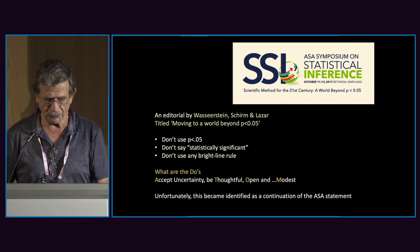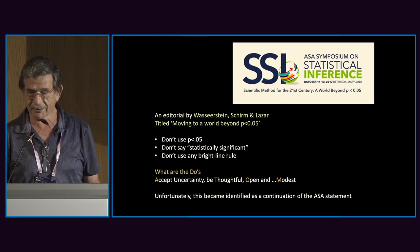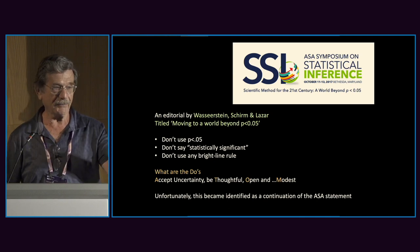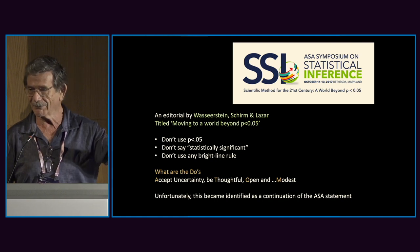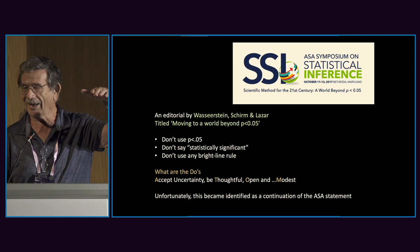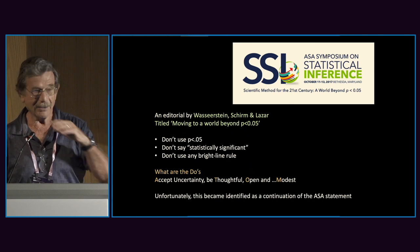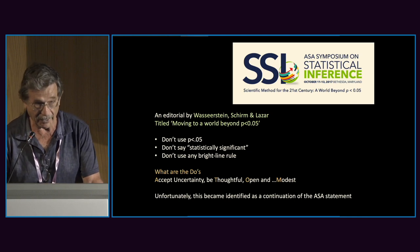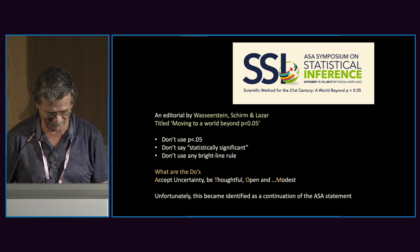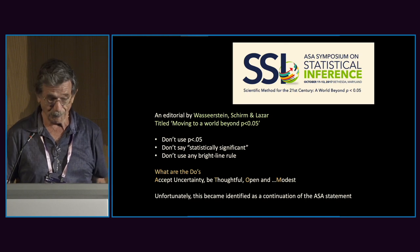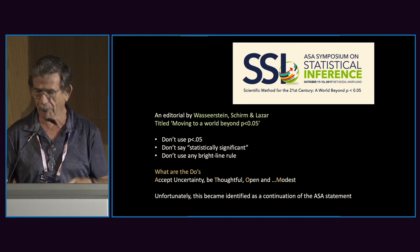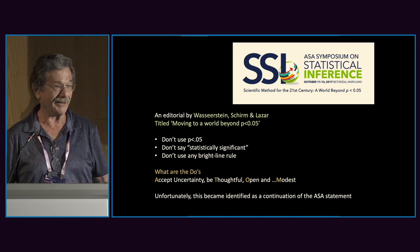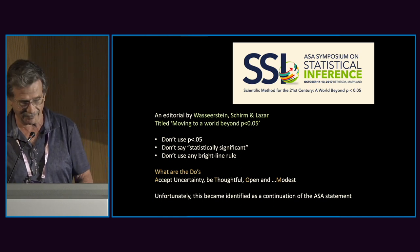The editorial said: don't use p < 0.05, don't say 'statistically significant', don't use any bright-line rule. Can you live with no bright-line rule given all the graphical displays, when you have active and non-active, connected and non-connected? There's no way you can do science, at least in your part of science. What should you do? Accept uncertainty, be thoughtful, open, and modest — that's very nice, but you can't do science with this kind of recipe for statistical analysis.